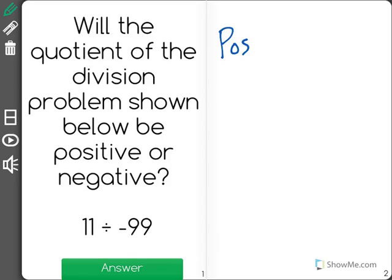We could have a positive divided by a positive, so that could be something like 12 divided by 4, and we will always for that get a positive answer.